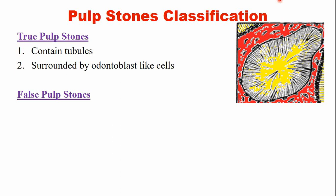This is a picture of a true pulp stone. In this pulp stone, you can see a tubular structure that is similar to dentine. Normally, dentine also has tubules, so this stone also contains tubules. That's why this stone is known as the true pulp stone. The periphery of the stone has cells similar to odontoblasts — odontoblast-like cells surround the periphery of the stone.